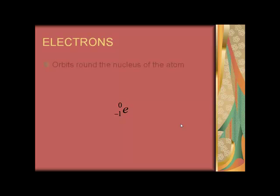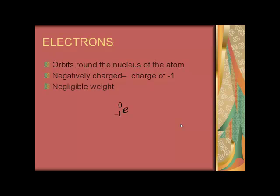Electrons orbit around the nucleus of the atom. They are negatively charged with a charge of minus one. They are of negligible weight.